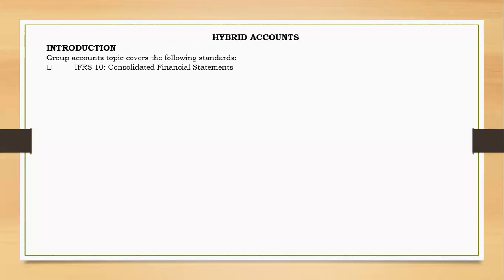That is IFRS 10. Then we have IFRS 3, called Business Combination. It explains when something is said to be a business and when you combine businesses. When two businesses become one by acquiring more than 50% of shares, we usually determine something called goodwill. Goodwill is an intangible asset — one that was available in the books but after purchasing, you paid for more than the actual value of that business.